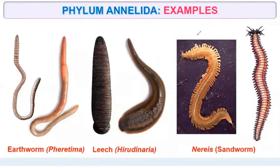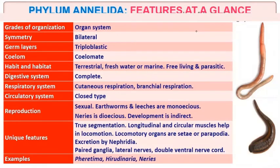Examples of Annelida are earthworm, leech, and Nereis. Annelida at a glance: the organism shows organ system of organization. Bilateral symmetry. Germinal layer is triploblastic coelomate. Organisms are terrestrial, freshwater, or marine — free living or parasitic.